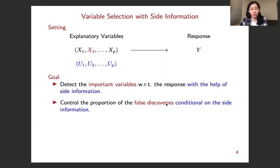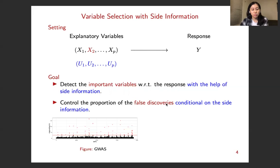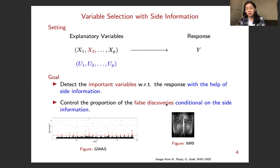So recall the GWAS example. The side information in this example can be the prior knowledge of the genetic variants. And in the MRI example, the side information can be the location of the regions of interest.